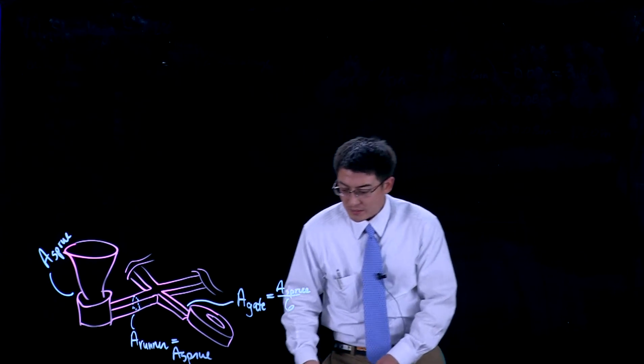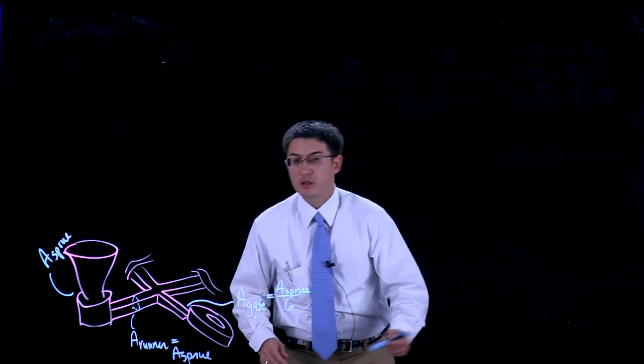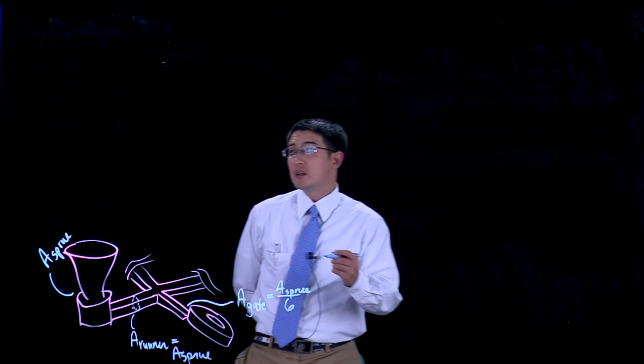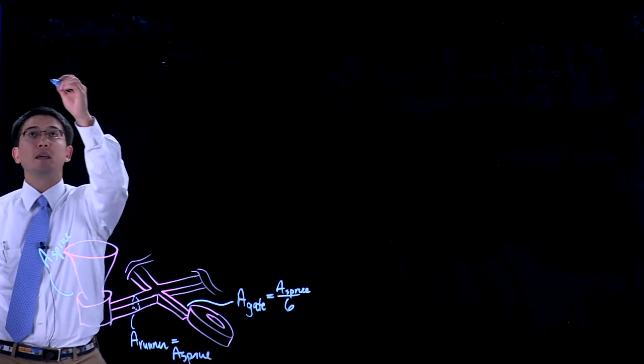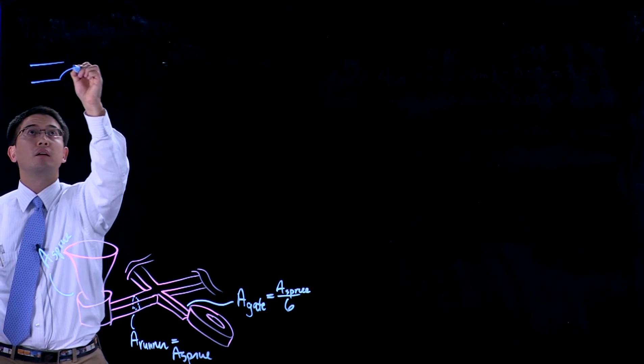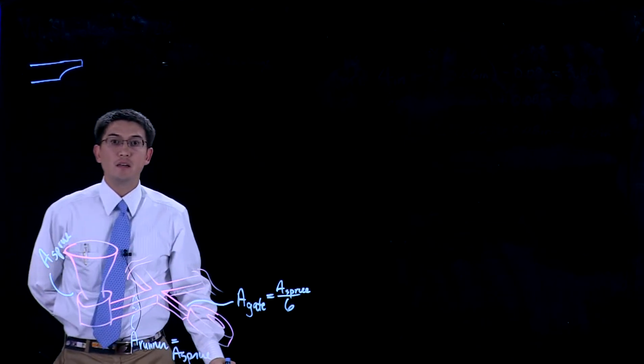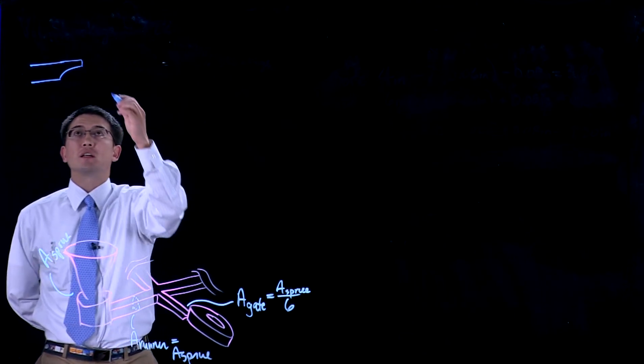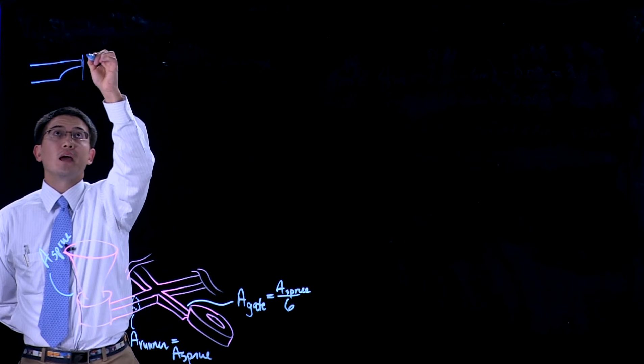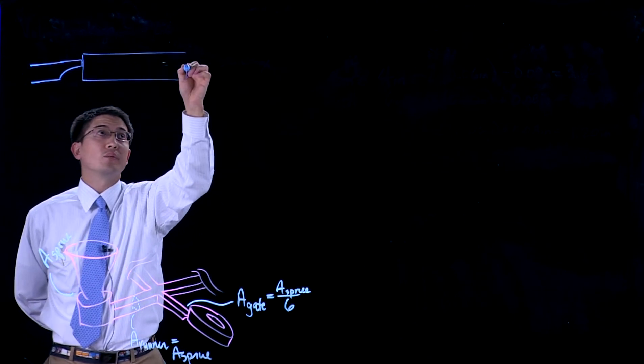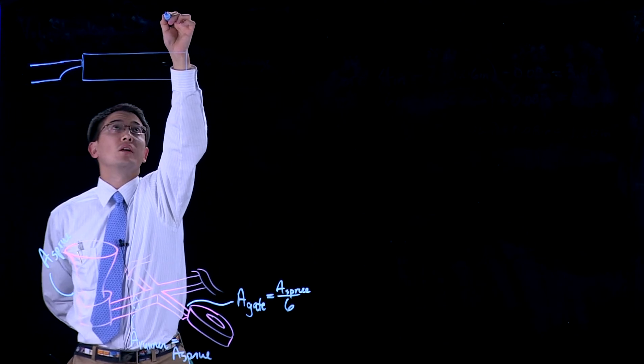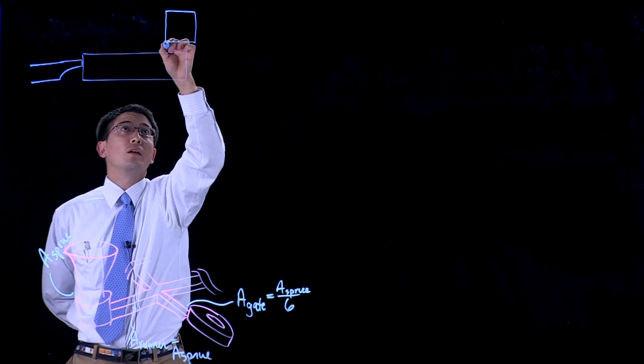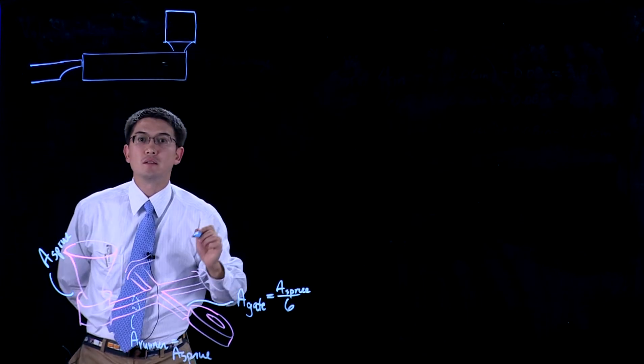Now we need to place a riser to help fill this part. So we're going to be filling in, this is it looking at it from the side. We have our runner coming in, we choke down for our gate to reduce the cross-sectional area, and then we have our part. This is again looking in from the side. We'll place our riser, and it said it was roughly a cylinder, and it would fill in something like this.